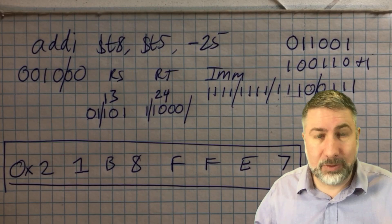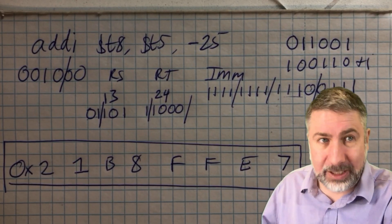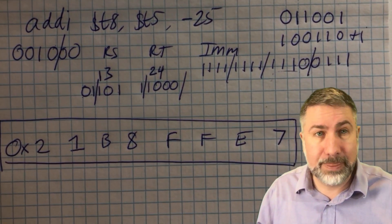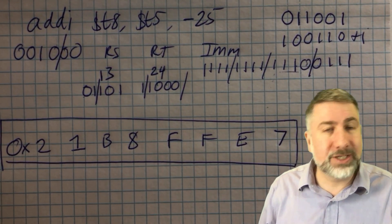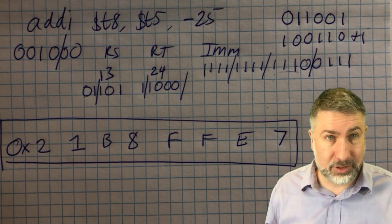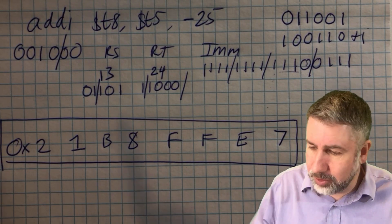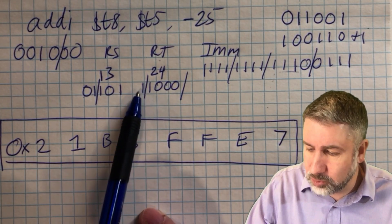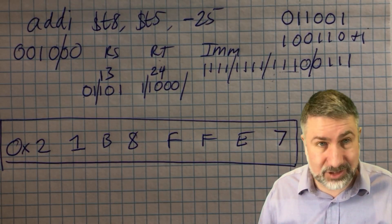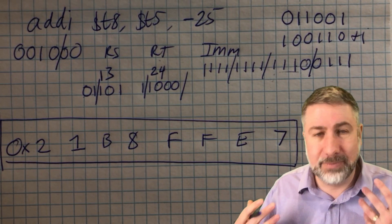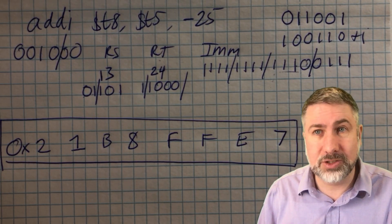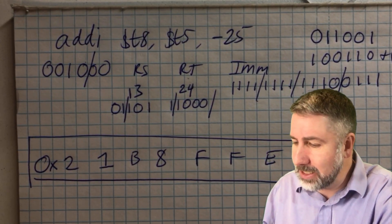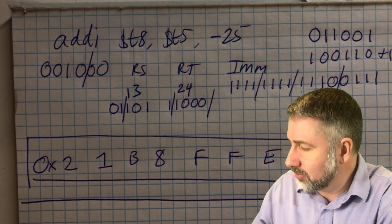Now if I ask you on the exam what the 32-bit hex value is for add immediate T8, T5, negative 25, that's the result. If I asked what the value of RT is for this instruction, you'd need to know RT was T8, then give register 24 which is 11000. There are lots of different kinds of questions I can ask about these instructions, so keep that in mind. Let's do another one.